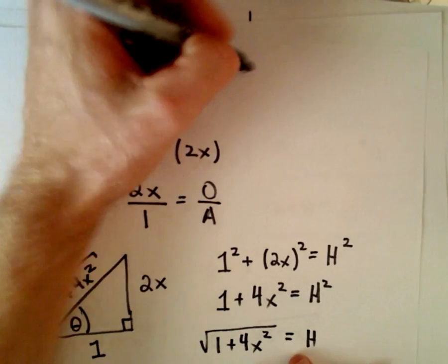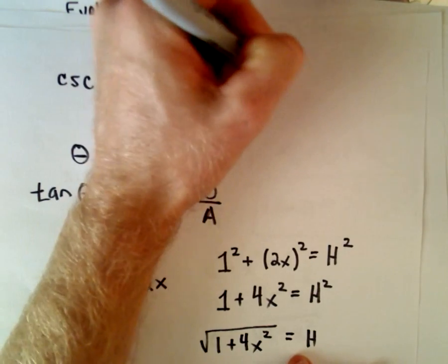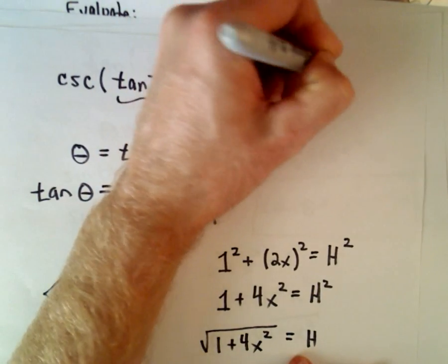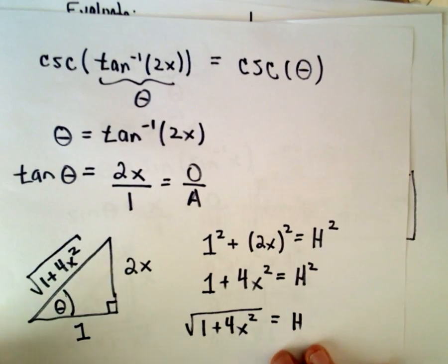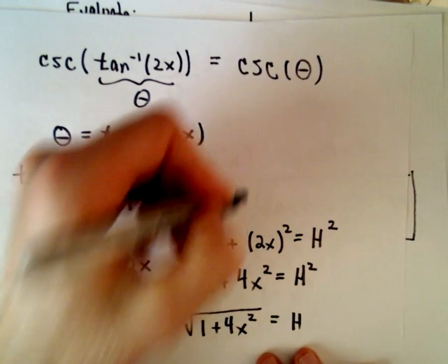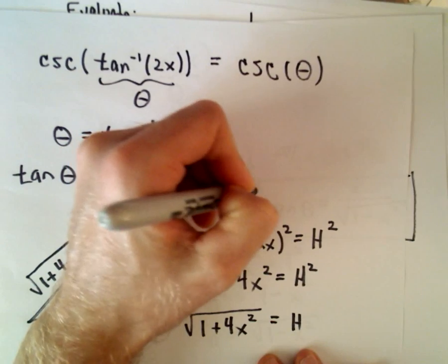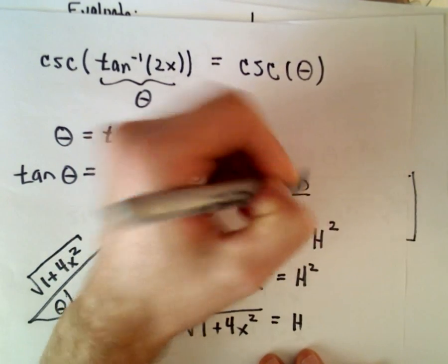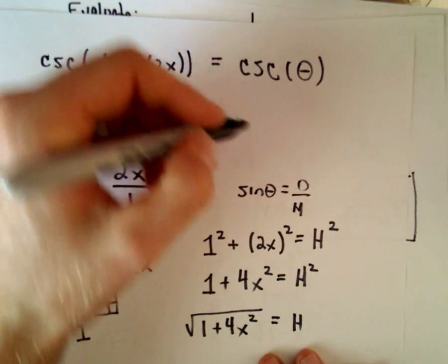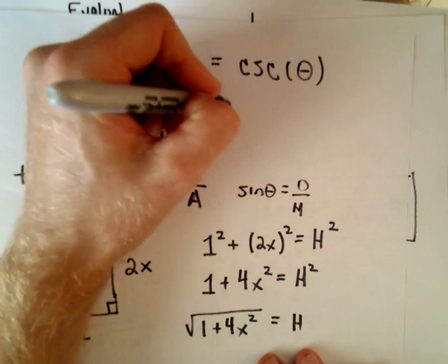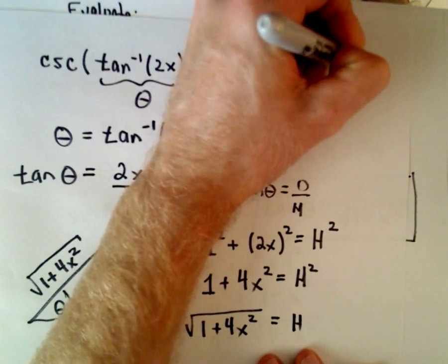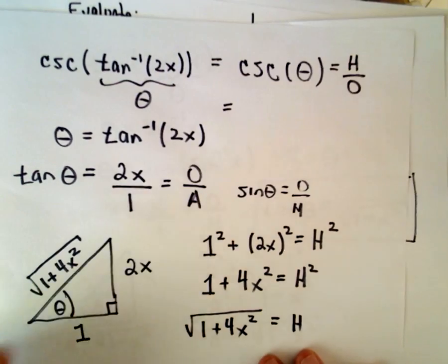The inside is what we called theta. So equivalently, we're trying to evaluate cosecant of theta. Well, let's see. So cosecant is 1 over sine. Again, we saw that sine of an angle is the opposite over the hypotenuse. So cosecant of theta is going to be the hypotenuse over the opposite.